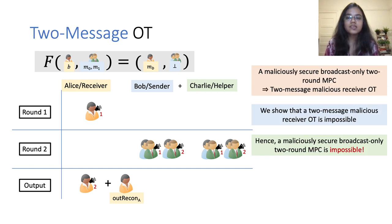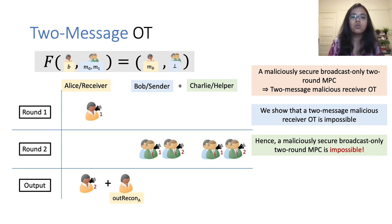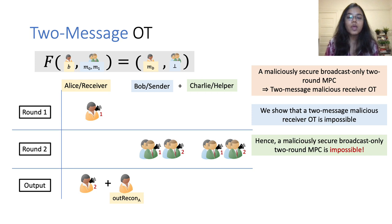Hence, we have successfully shown that a maliciously secure broadcast-only two-round MPC implies a two-message malicious-receiver OT. We additionally show in our paper that a two-message malicious-receiver OT is in fact impossible, thereby establishing impossibility of a maliciously secure broadcast-only two-round MPC. Unfortunately, due to time constraints, I won't be able to discuss the impossibility of two-message malicious-receiver OT in this talk.